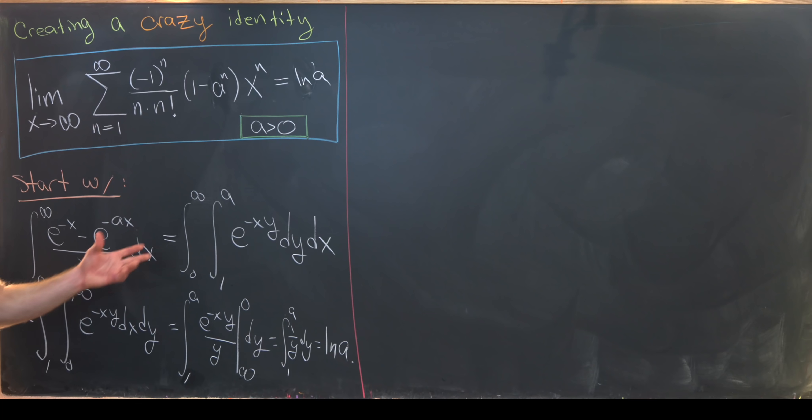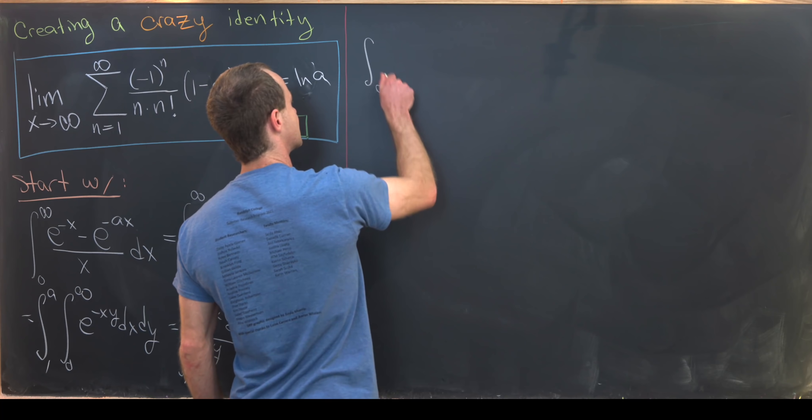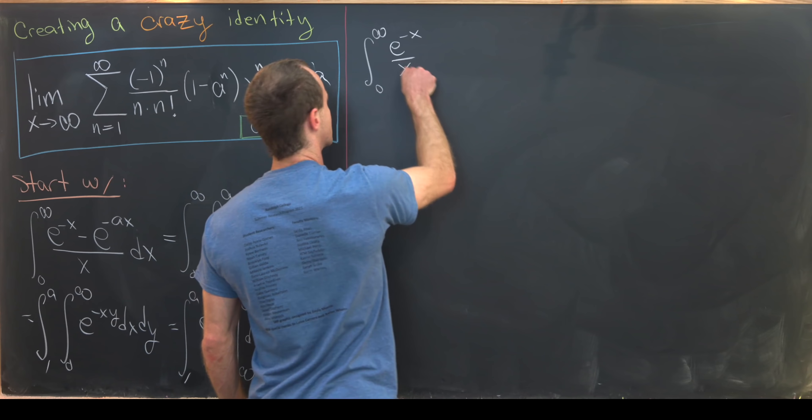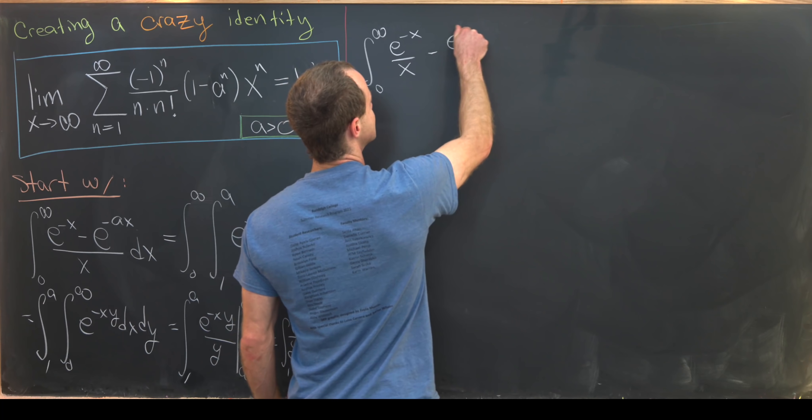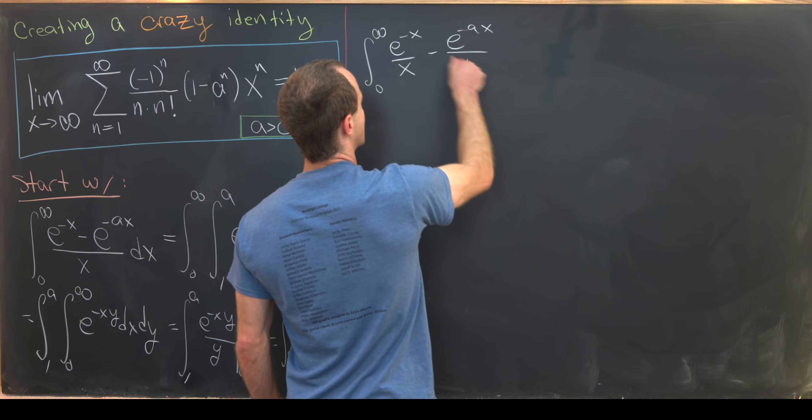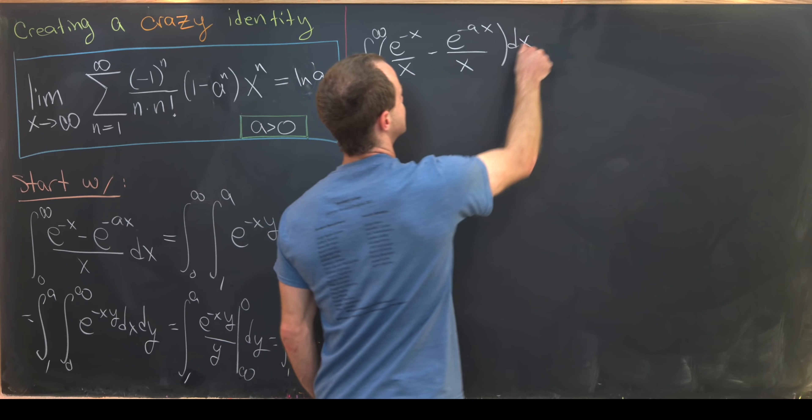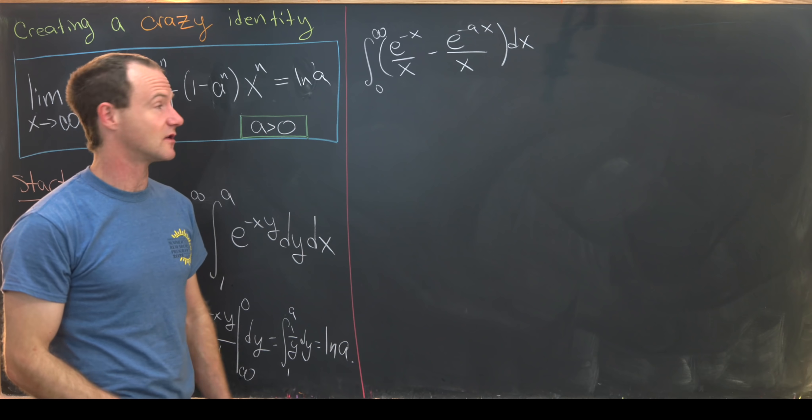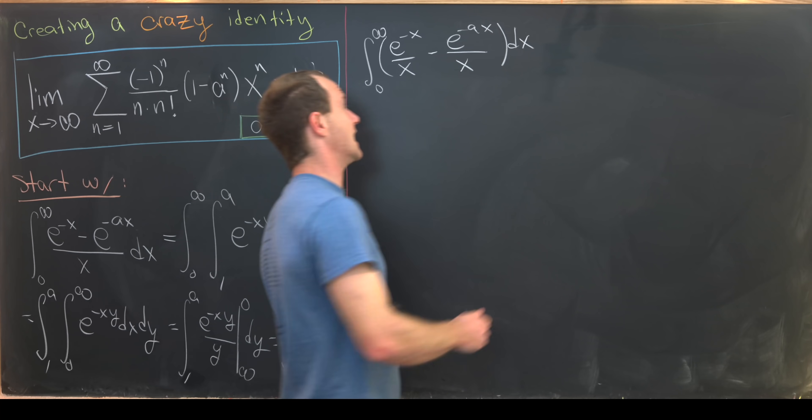But now we just have to glue these two objects together. So let's maybe look at this a different way. Let's take this integral from 0 to infinity of e to the minus x over x minus e to the minus ax over x dx. Let's expand each of those using the standard Taylor series for e to the x.